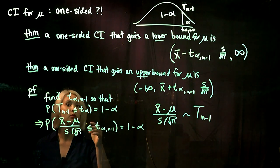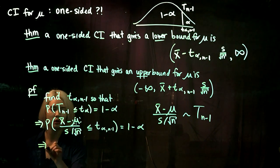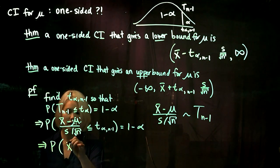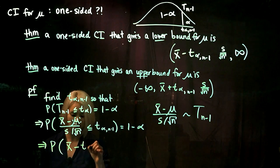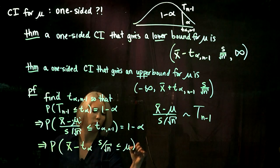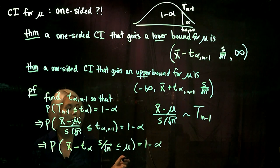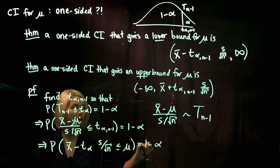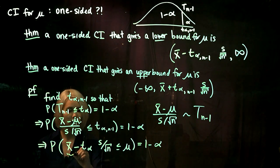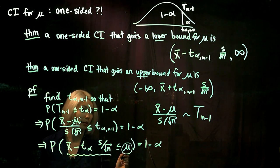Now we're trying to get a confidence interval for mu, so let's solve for mu. When we solve for mu we get x-bar minus t_alpha times s divided by root n is less than or equal to mu. This is true with probability 1 minus alpha, meaning 1 minus alpha times 100 percent of confidence intervals formed with this quantity as our lower bound are going to contain our parameter mu.